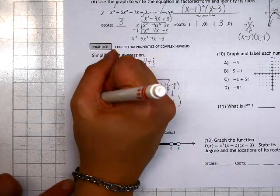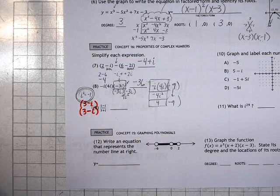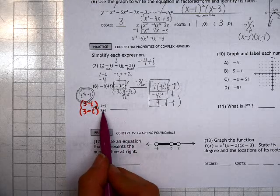We also know that if we're going to multiply the bottom of a fraction, we also have to multiply the top. So we're going to multiply both top and bottom by 3 minus i. That's the conjugate of what we were given.